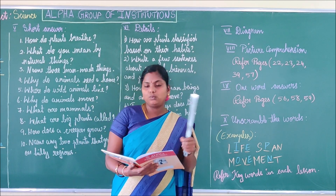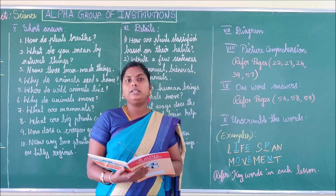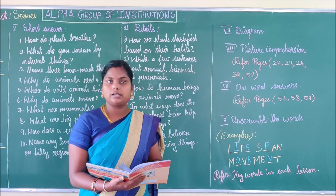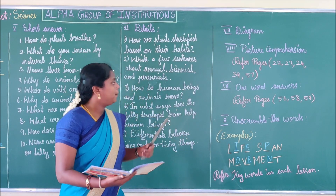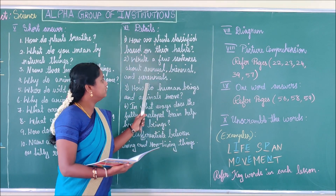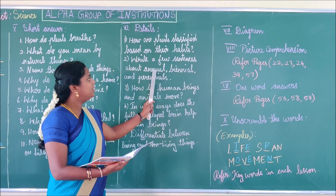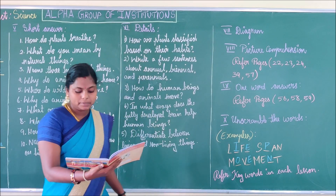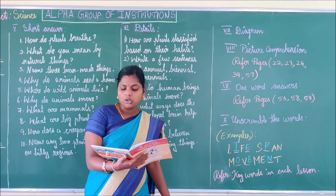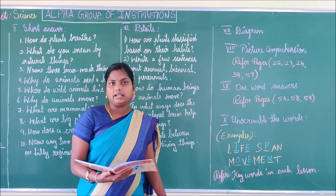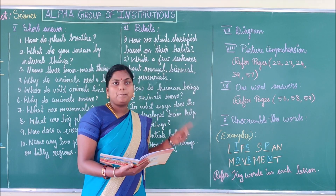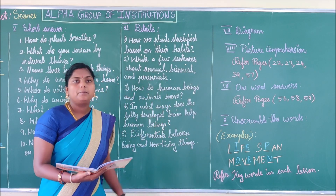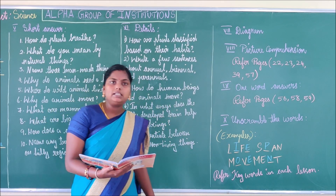Annuals are plants that complete their life cycle in one growing season — within one year. Examples of annuals are marigold and sunflower.